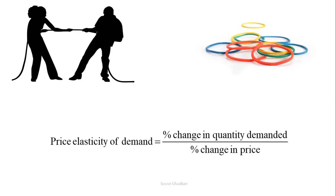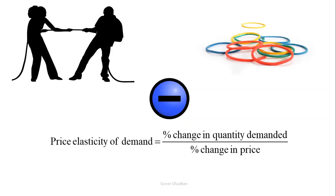We have to note that elasticity is different from the slope. For example, we might have a straight-line demand curve with a constant slope; however, the elasticity will be changing along the demand curve. Also, you must be very careful about signs, because it's generally understood that demand elasticities are negative. However, they are often reported and discussed without the negative sign — and you know it's negative because of the law of demand, which states that there is a negative relationship between price and quantity demanded.